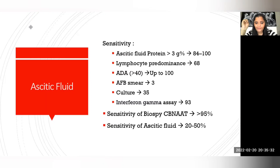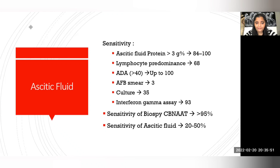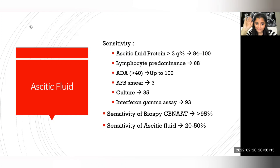For ascitic fluid, CB-NAT sensitivity is very low — 20 to 50%. Biopsy gives better sensitivity. Indirect evidence pointing toward TB includes an exudative pattern: ascitic fluid protein more than 3, lymphocyte predominant, and ADA more than 40. CB-NAT sensitivity on fluid is around 3% only, and culture is around 35%. In this situation, always look for disseminated TB, and if there is any area of involvement, take a biopsy and send for CB-NAT, which has a sensitivity of more than 95%.